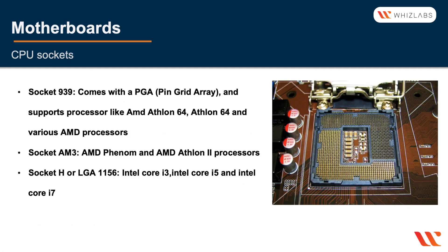Socket 939 is made specifically for AMD processors. The socket AM3 and the LGA 1156 are the more current sockets found in motherboards — AM3 is for the latest AMD processors and LGA 1156 is for Intel Core processors, including the i3, i5, and i7.